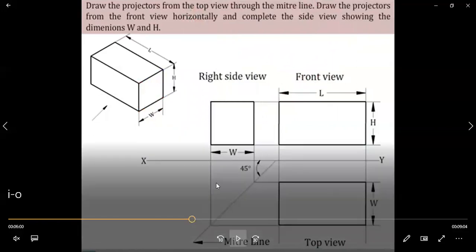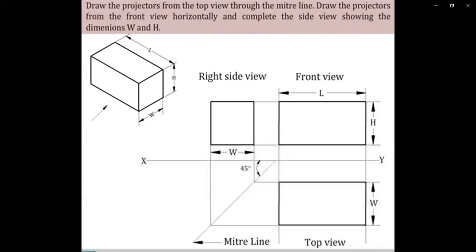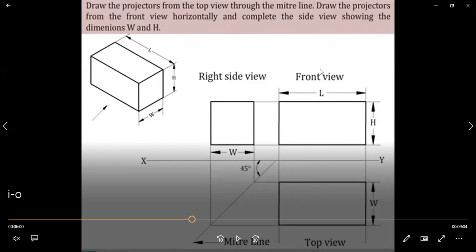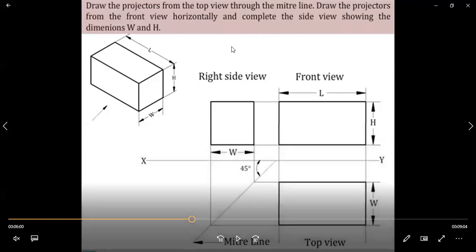Write all dimensions clearly. In the first angle projection method: the front view is above the reference line, the top view is below the reference line, and the side views are placed next to the front view — also above the reference line. The height in the front view equals the height in the right side view, and the width in the top view equals the width in the side view. This is how you convert a 3D diagram to 2D. Write down all dimensions and label front, top, and side views. Please subscribe to my channel and share with your friends. Thank you.